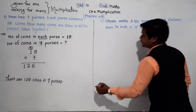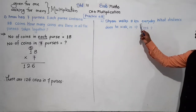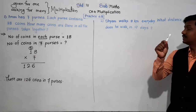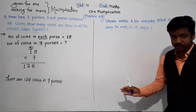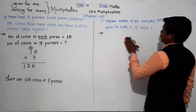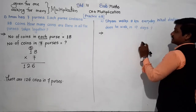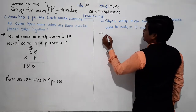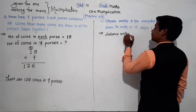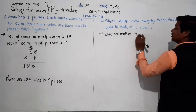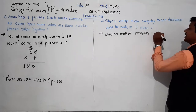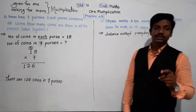Come to the next problem. See here: Shaan walks 9 km every day. What distance does he walk in 17 days? Shaan walks 9 km every day - suppose he goes for jogging and he walks 9 km every day. What distance does he walk in 17 days? So this is given - distance walked by Shaan every day is 9 km.